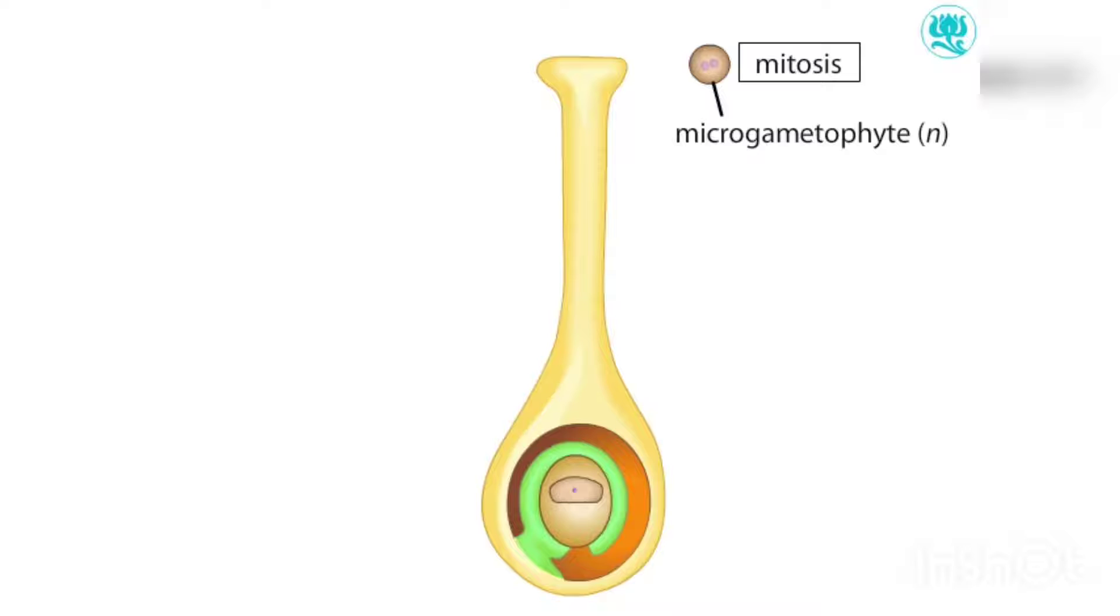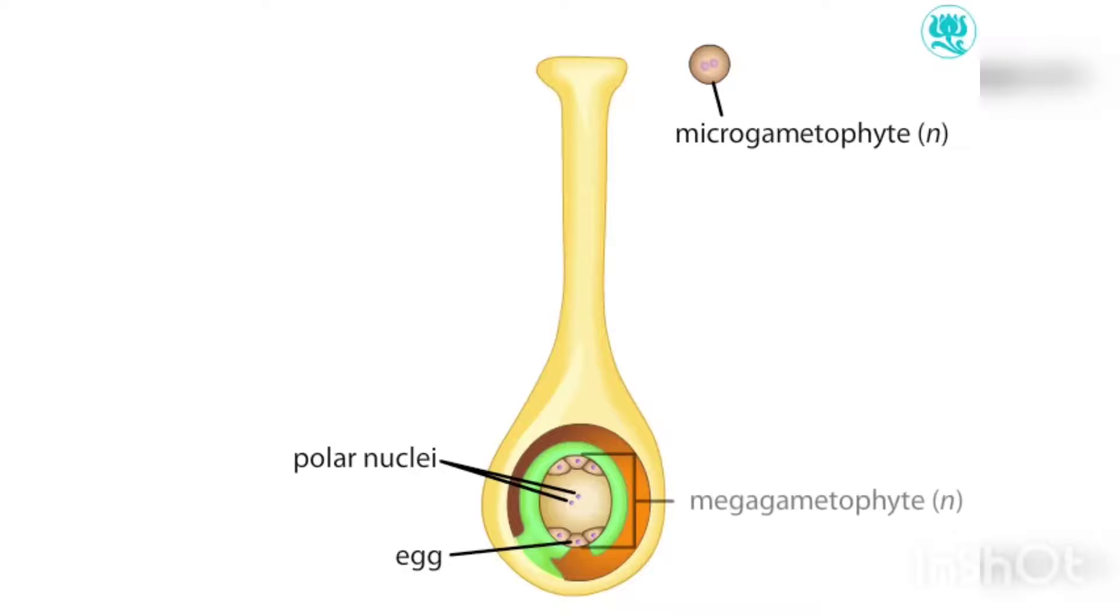The surviving megaspore divides by mitosis to produce seven haploid cells. One large, centrally located cell contains two nuclei called polar nuclei. Another cell is the egg. The seven-celled structure makes up the female gametophyte called the megagametophyte.